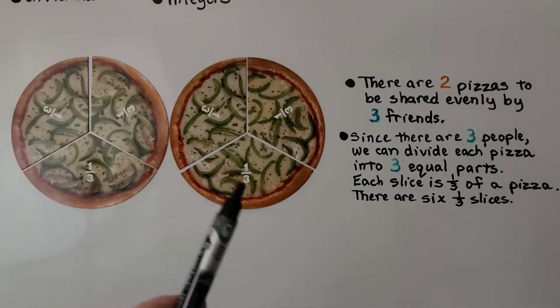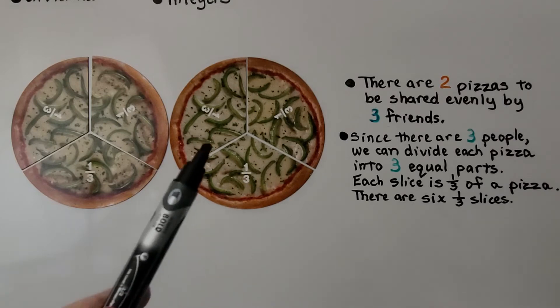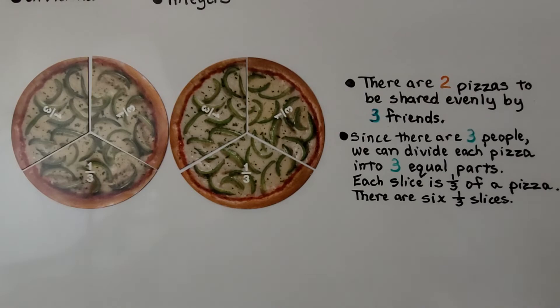There are two pizzas to be shared evenly by three friends. Since there are three people, we can divide each pizza into three equal parts. Each slice is one third of a pizza, and we'll get six slices.